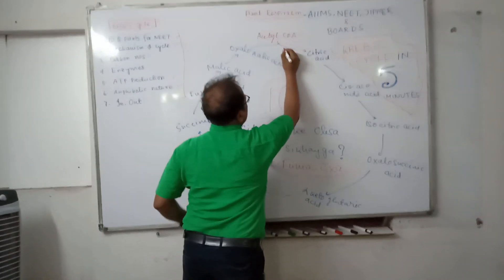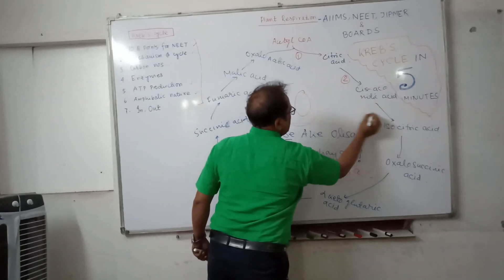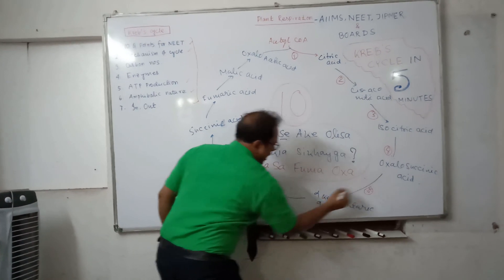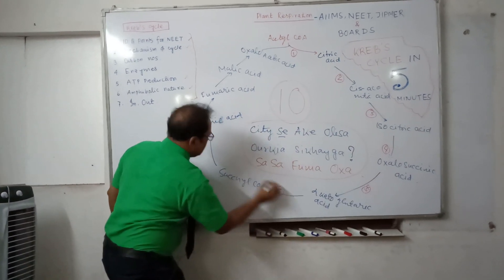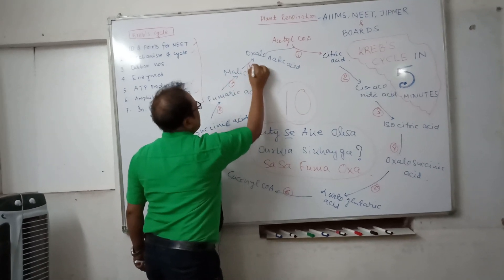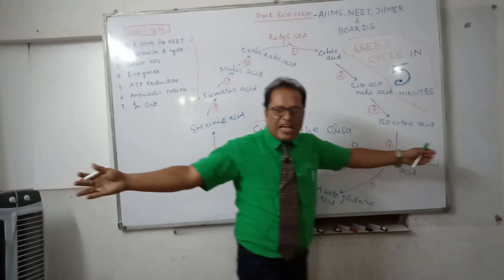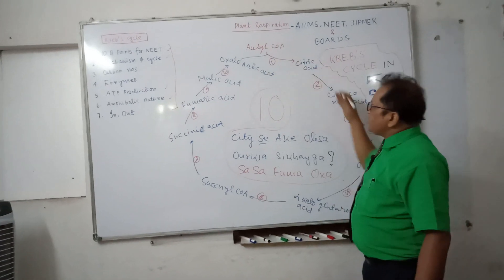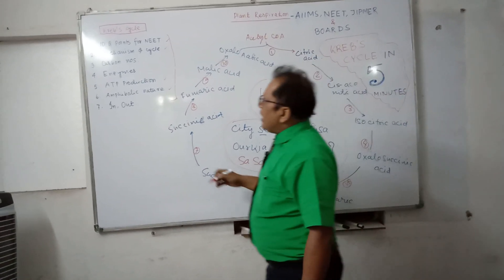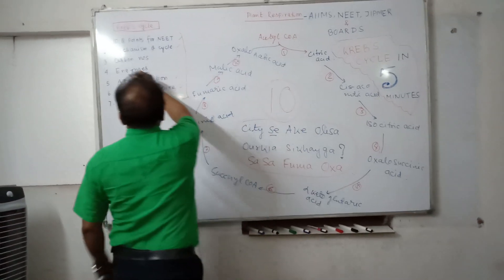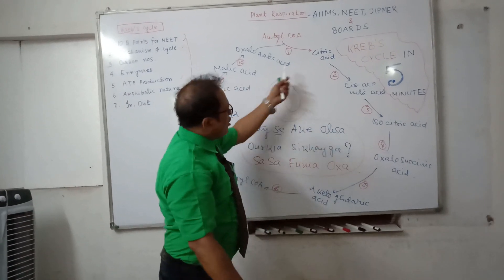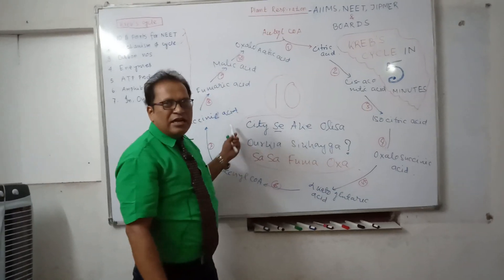So all 10 steps of Krebs cycle are clear. Now, the next most complicated part is the number of carbon atoms. In today's video, we are also covering the number of carbon atoms at each step. You don't need to memorize each one individually — whether a particular step has 5 carbons, 6 carbons, or 4 carbons.